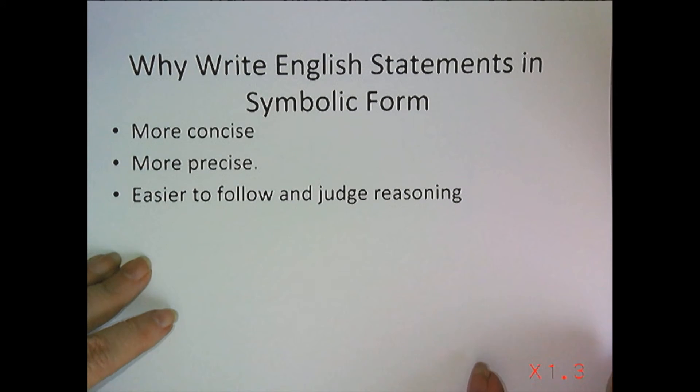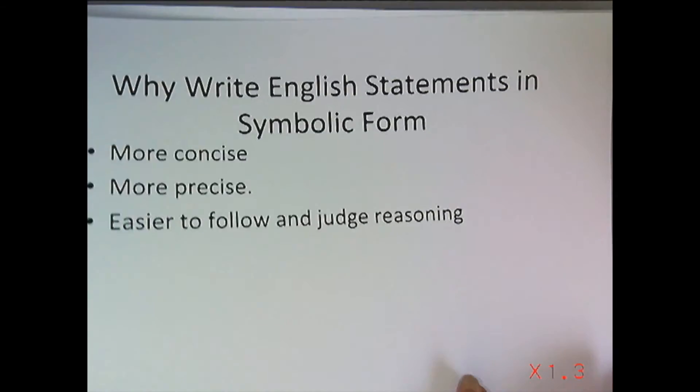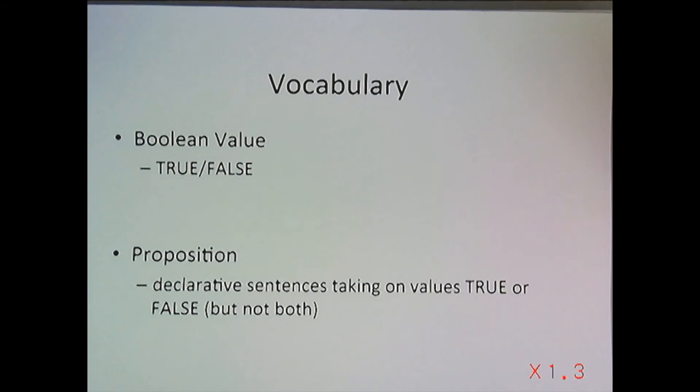Let's talk about some of the vocabulary we're going to run into during the course. First, we're going to talk about Boolean values. What are they? True, false. Sometimes we represent them as zeros, ones, or Ts and Fs, but a Boolean value is one of two: true, false.